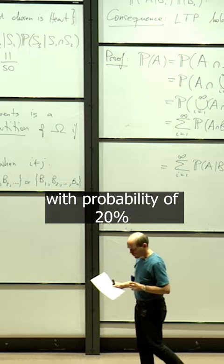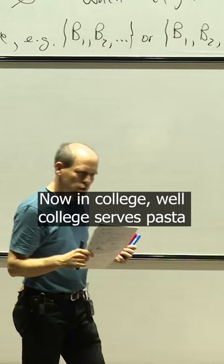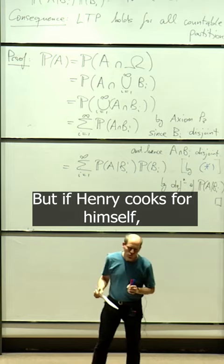Now, in college, the college serves pasta 15% of the time, but if Henry cooks for himself it's pasta 95% of the time. So what is the probability that Henry is having pasta tonight?